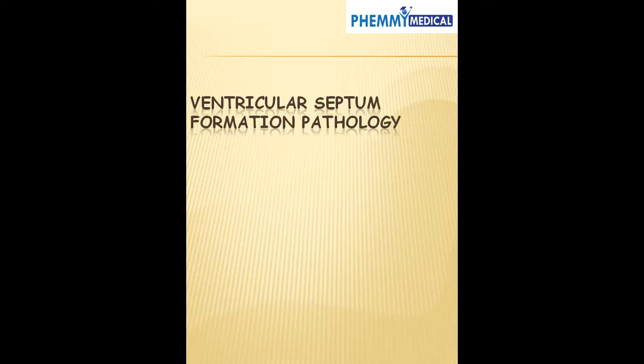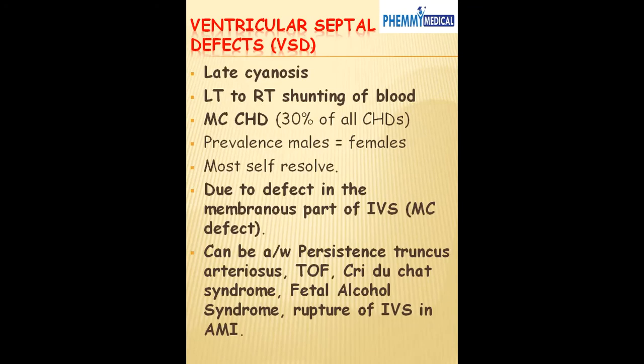Now let's talk about the pathology of the ventricular septum. The first one is ventricular septal defect, VSD. This is one of the causes of late cyanosis. The three major causes of late cyanosis are: number one, atrial septal defect; number two, ventricular septal defect; and number three, patent ductus arteriosus. VSD produces a left-to-right shunt.